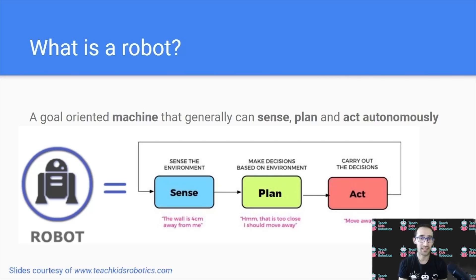What do each of these mean? Sense means it's able to sense the environment and it knows what's going on around it, such as there being a wall four feet to the left of me.